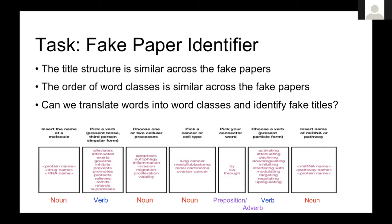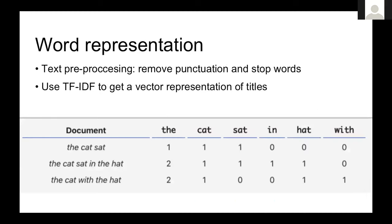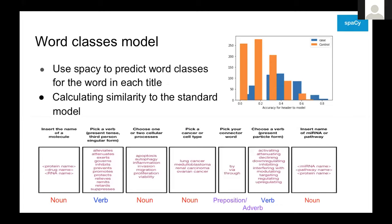We thought that if we can take the titles and translate the words into word classes, maybe we could use this to identify the fake papers. The third thing we did was to represent these titles using TF-IDF to get a vector representation, where each title is a row and each column is the words that exist across all titles, and you count each word for each title.